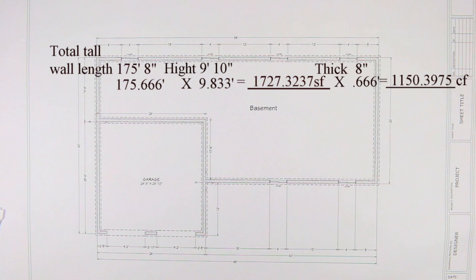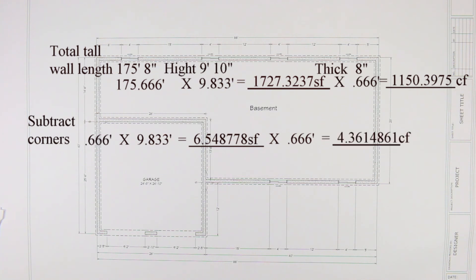Now we have over calculated the corners. 8 inches by 8 inches by 9 foot 10 too much. So we need to subtract that from our calculation. So that would be 0.666 times 9.833 feet, that equals 6.548778. Then we need to times that by the thickness 0.666, that equals 4.3614861. Now we have six corners of the tall wall and so we need to times that by 6.